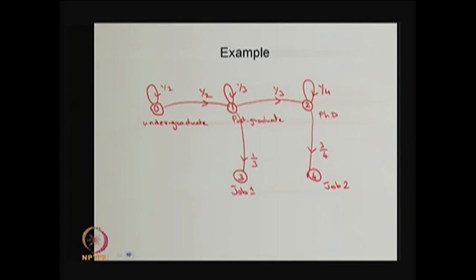I am going to give one simple example for this type of reducible Markov chain with the transient states and one or more absorption states. I am making the assumption of a finite Markov chain. In a finite Markov chain, at least one state is positive recurrent.